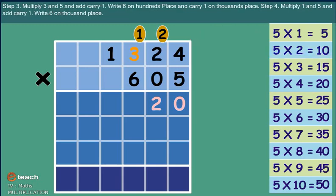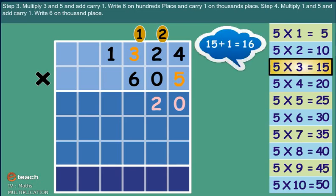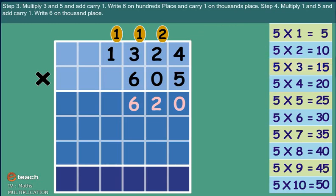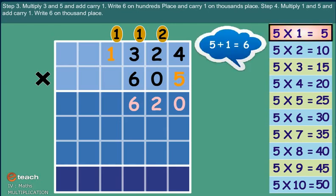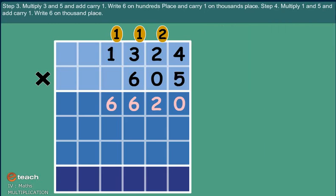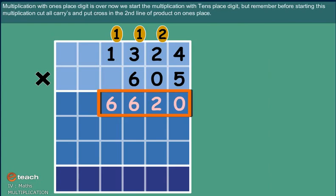Step 3: Multiply three and five and add carry 1. Write 6 on hundreds place and carry 1 on thousands place. Step 4: Multiply one and five and add carry 1. Write 6 on thousands place. Multiplication with ones place digit is over.